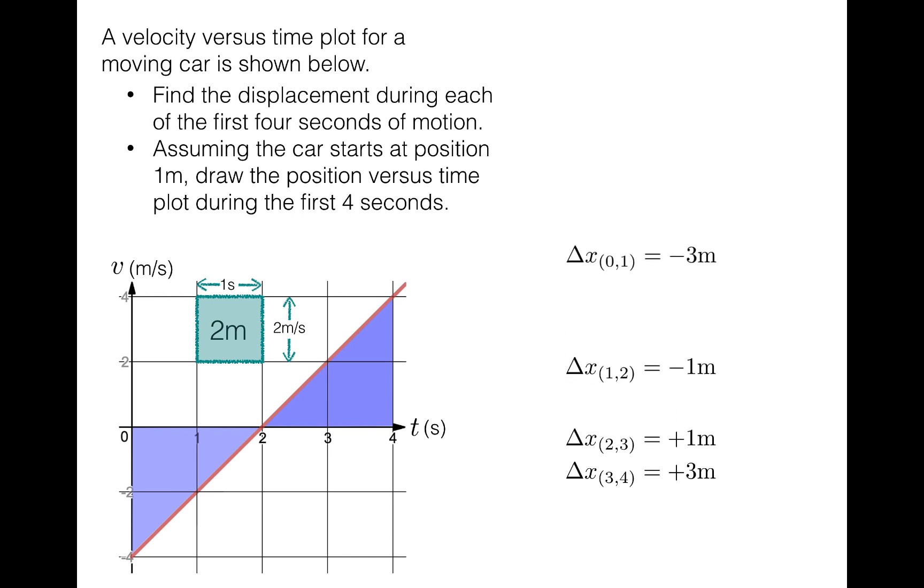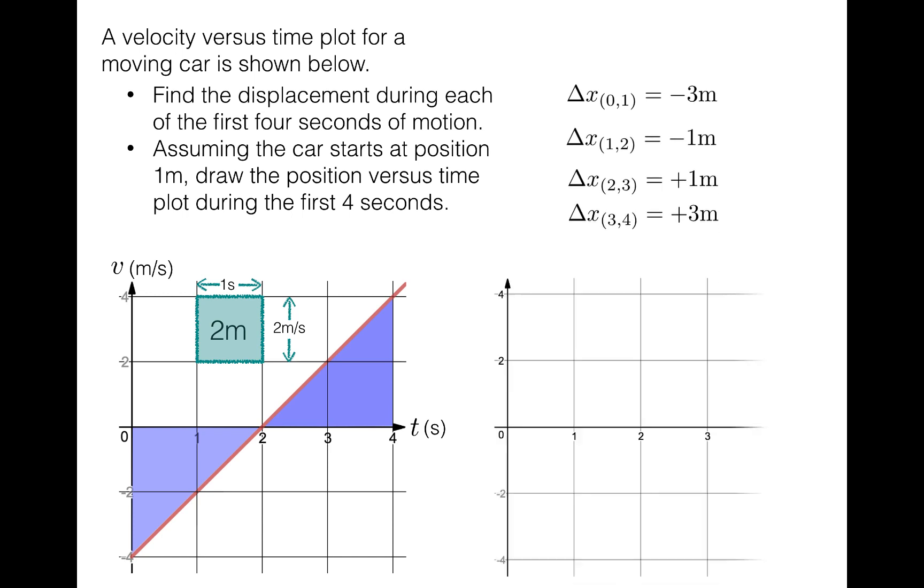Let's move those up, because I'll use them again when I do the next part of the question, which is to plot position versus time. We are told in the question that the initial position is one meter. In the first second, the displacement is minus three, so that means that t equals one second, the position should be one minus three meters, or minus two meters. In the next second, the displacement is minus one meter, so at t equals two seconds, the position should be minus three meters.